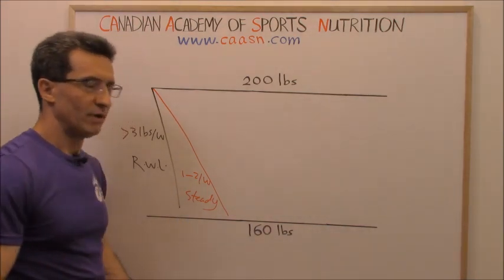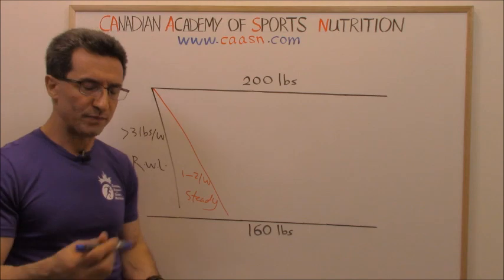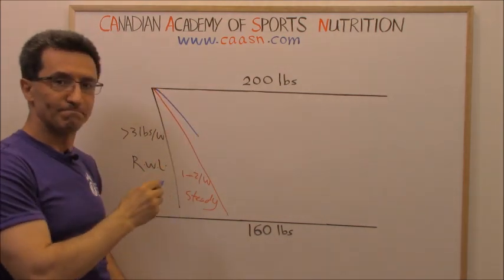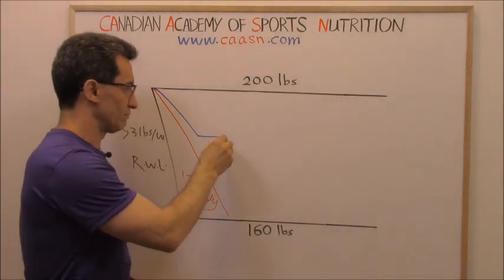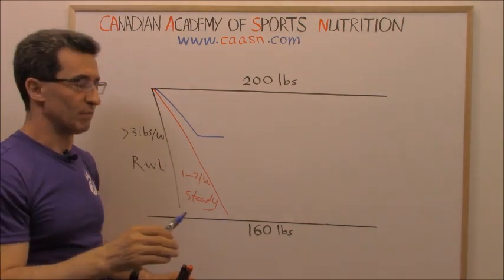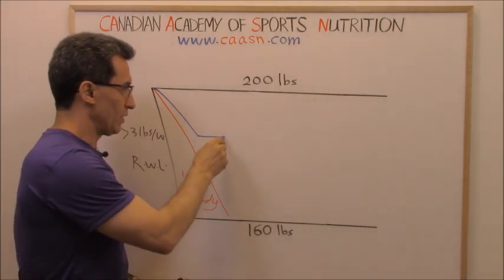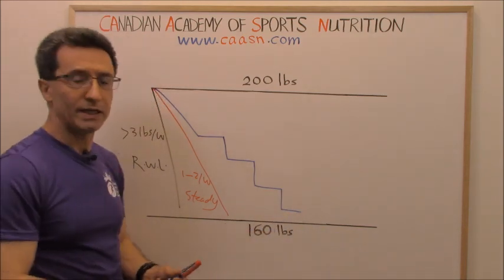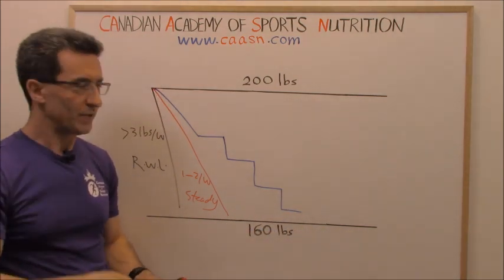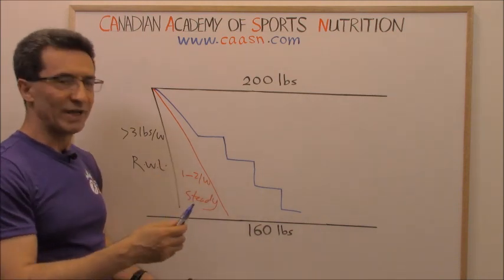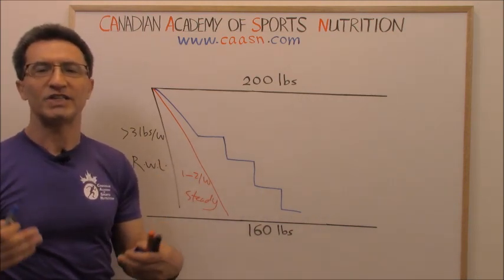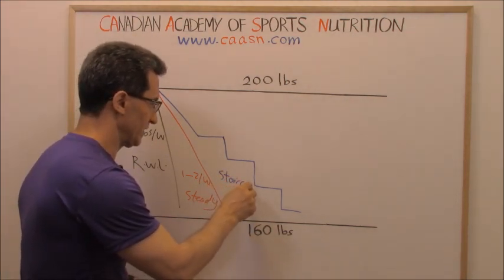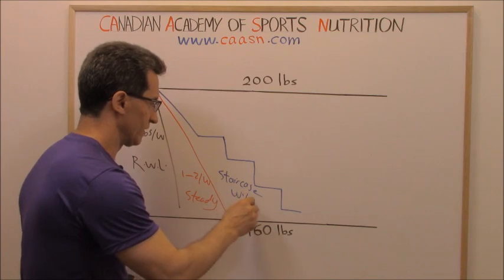Pattern number three: you lose some weight, then you get stuck — you plateau. Then you lose some, you're stuck, you lose, you're stuck. But finally you reach your goals. In pattern number three, you create a sort of staircase pattern. That's why pattern number three is called staircase weight loss.